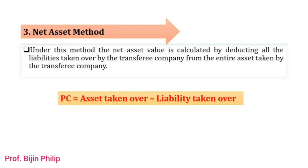The third method is the net asset method. Under this method, the net asset value is calculated by deducting all the liabilities taken over from the entire assets taken over by the purchasing company. The formula is: Purchase Consideration = Assets Taken Over minus Liabilities Taken Over.